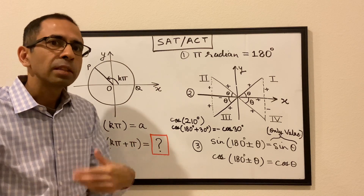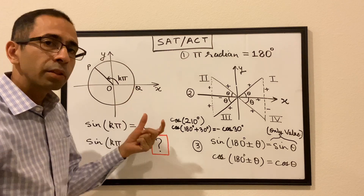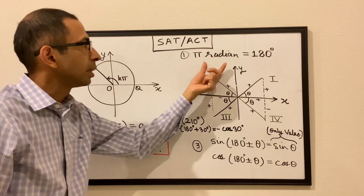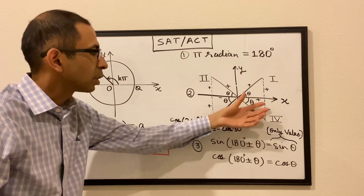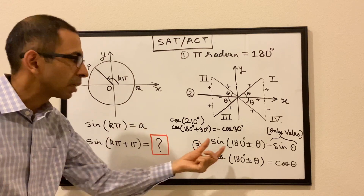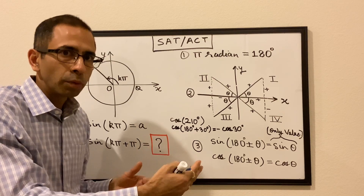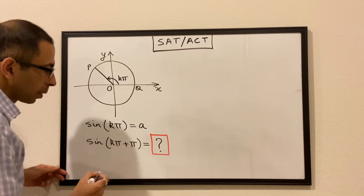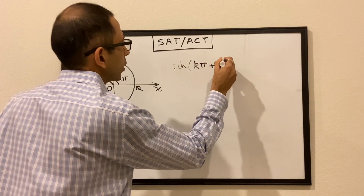It will sound a bit confusing, but as we do a few questions it will become more clear. Just to reiterate, these are the three things we are talking about: the conversion between radians and degrees; understanding whether cosine, sine, and all trig functions will be positive or negative in different quadrants; and the third thing is that when dealing with 180 degrees, sine remains sine and cosine remains cosine — they do not flip. Now let's go back to this question. We have to find the value of sine of kπ plus π.